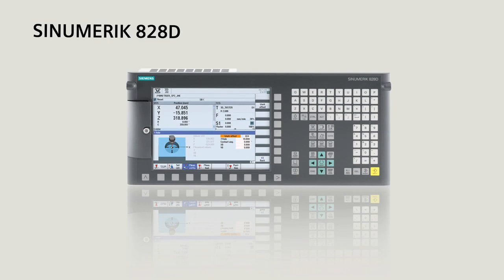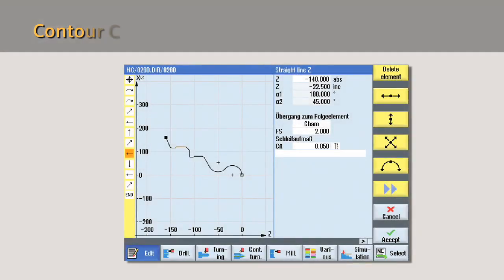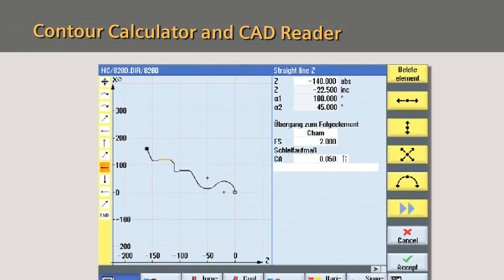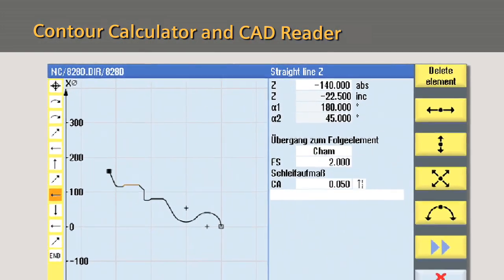Give your job shop a new business advantage with the SINUMERIK 828D CNC. Achieve faster and easier part production using the contour calculator feature of the control.